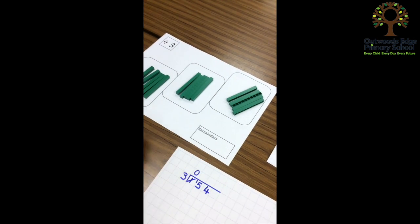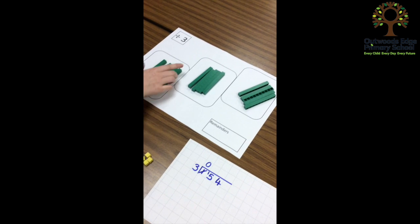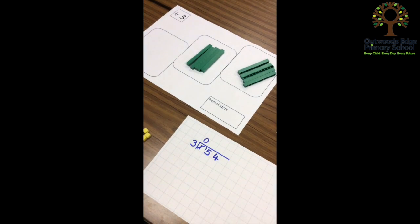Now, 15 tens divides equally by three, and the answer is five.